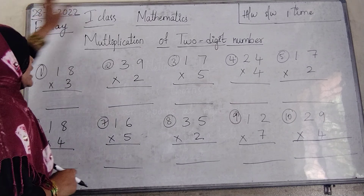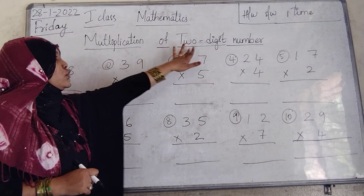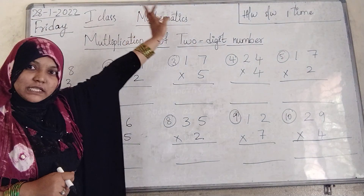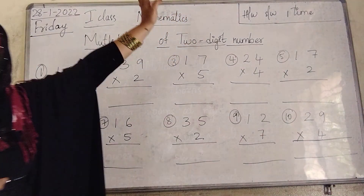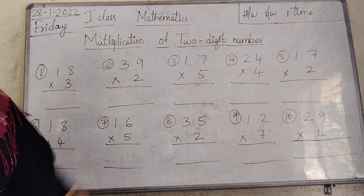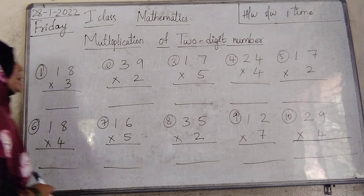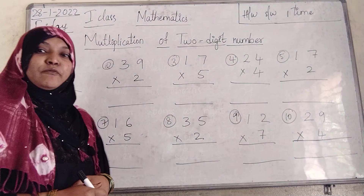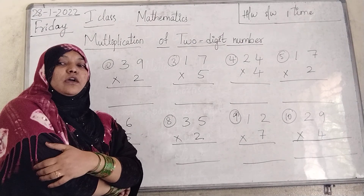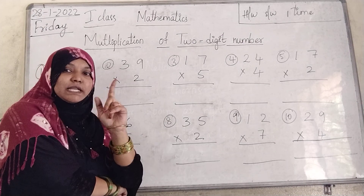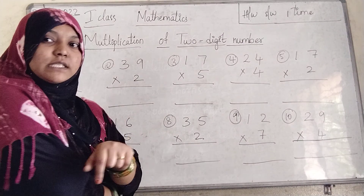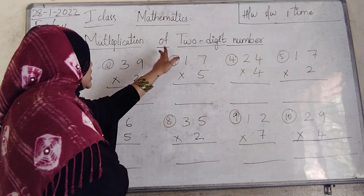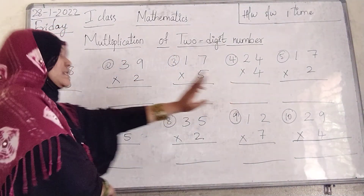Now I am going to take multiplication of two digit numbers in mathematics. Multiplication of two digit number. In the previous class we learnt multiplication of one digit number. Now in this class we are going to learn multiplication of two digit numbers.